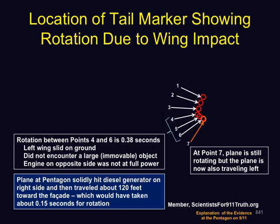In frames 1, 2, and 3, the plane is not significantly rotating. The time from markers 4 to 6 is 0.38 seconds, during which time the plane rotated significantly. The amount of rotation here is simply induced by the engine sliding on the ground, and the engine on the opposite side was not at full power. In the case of the Pentagon plane, the engine struck an essentially immovable object, taking a chunk out of it, and the opposite engine was at full power. This would tend to compensate for the fact that the Pentagon plane traveled only 120 feet after generator-trailer impact, allowing for 0.15 seconds of rotation. It shows that when there is an off-center impact, yaw rotation is a significant effect, and it would affect the plane at the Pentagon and the way it collided with the Pentagon wall.